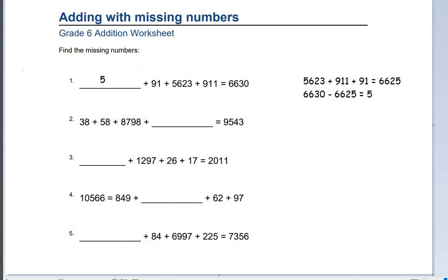Question number 2. 38 plus 58 plus 8,798 plus blank equals 9,543. First, we can do 8,798 plus 58 plus 38, which gives us a total of 8,894. Then minus that from the 9,543, giving us a total of blank equals 649. Excellent.